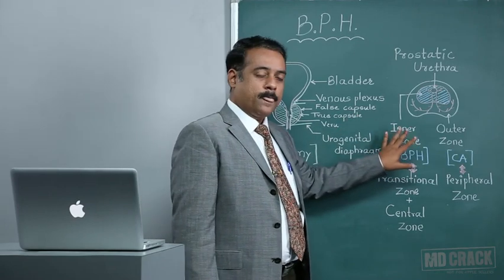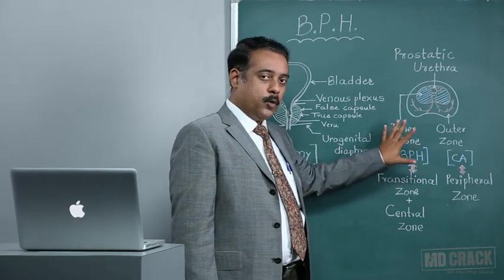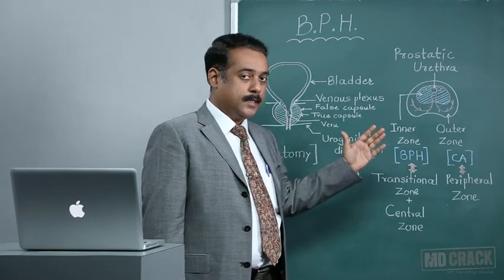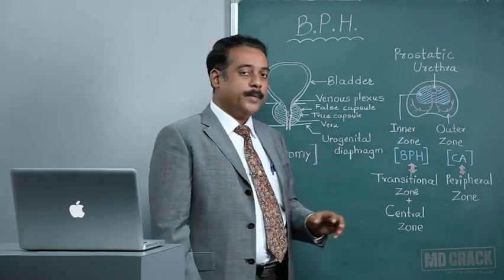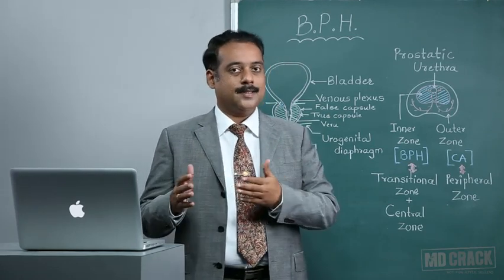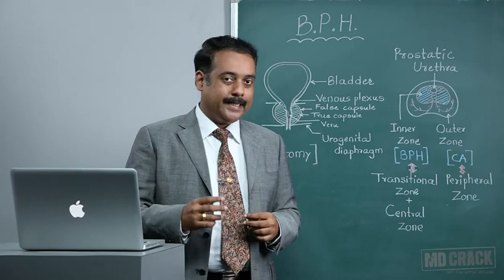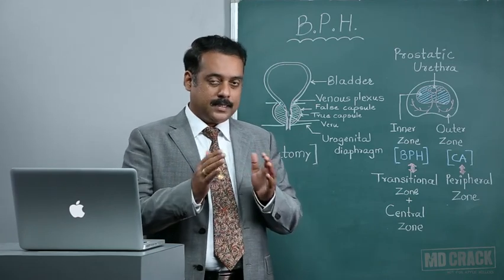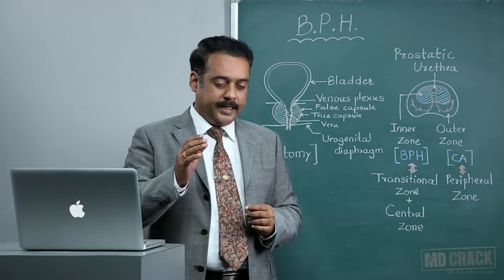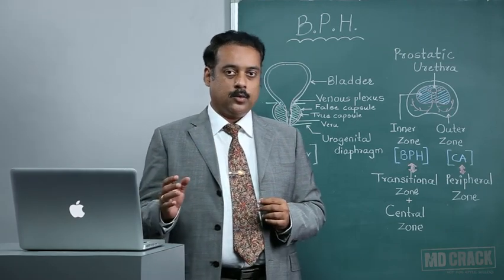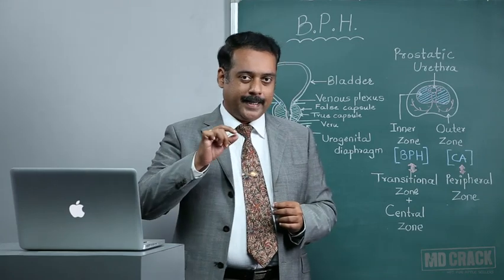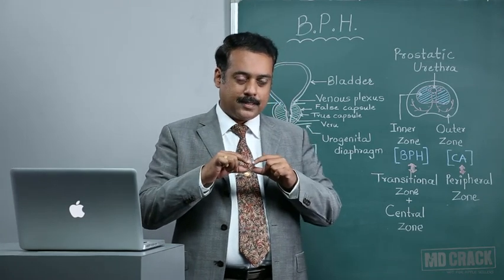The second diagram will give you an overview of the various zones in the prostate gland. There are two main zones for simplicity: one is the inner zone versus the outer zone. In technical terms, we call it the central zone against the peripheral zone. In between the central zone and peripheral zone, there is a small portion which we call the transitional zone.